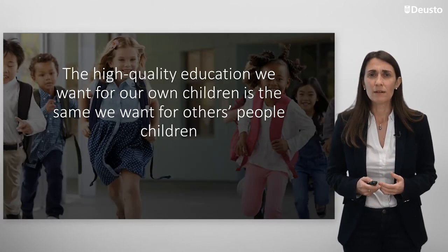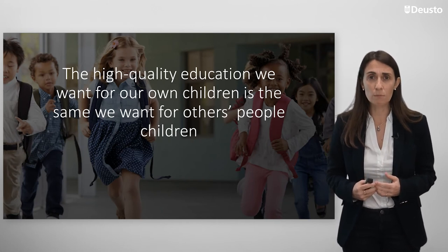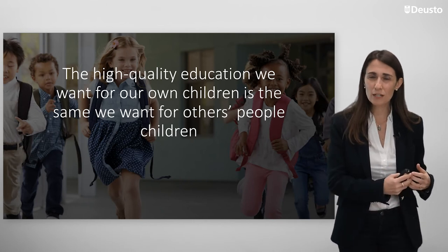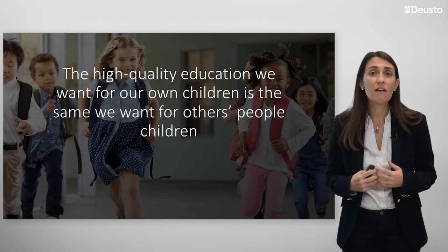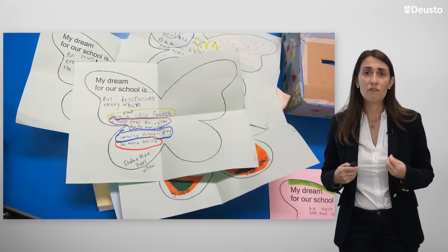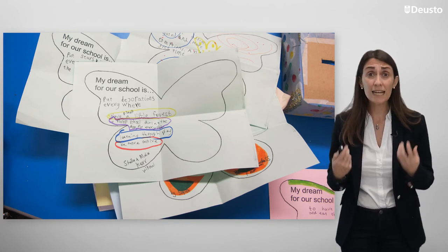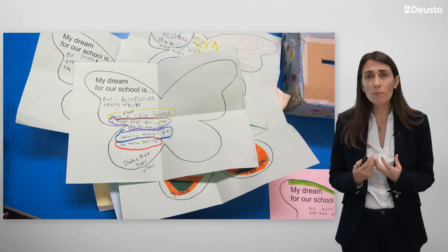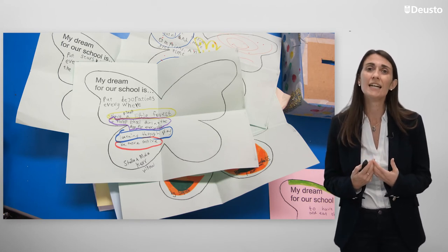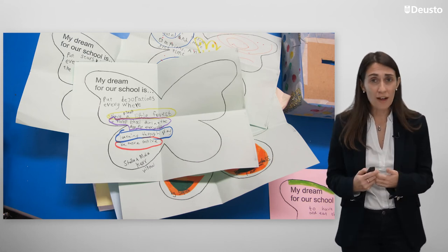Every school makes this big dream — that the high-quality education we want for our own children is the same that we want for other people's children. This ends the double standards of providing high-quality education for some kids and less for others, and achieves efficiency and equity for everyone. All the community dreams together — teachers dream, children dream, families dream — in many different ways: putting their dreams in a box, with letters, with social media, or holding assemblies to collect all the voices and establish a common purpose and shared goal. Teachers come to realize that their dreams are not so different from those of parents or children.